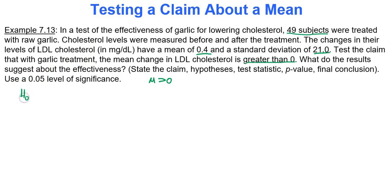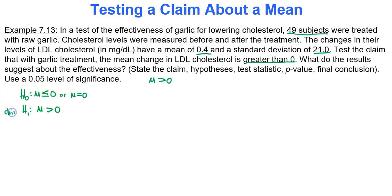Let's state the hypotheses. Mu greater than zero does not contain equality, so it must go with the alternative hypothesis. Therefore the null hypothesis is mu equal to zero. Greater than zero is what was mentioned in the question, so that is our claim. Google Sheets is perfect for calculating the test statistic and p-value. Use the data list tab with summary statistics, and importantly use the t-distribution region because we do not know the population standard deviation.